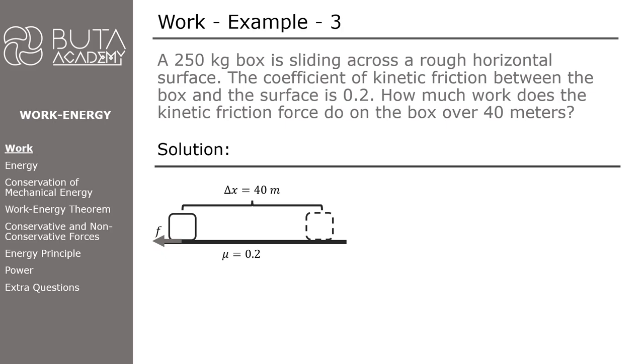Then we write down the equation for work, which is W = F × Δx × cos θ. The kinetic friction force is equal to the product of the coefficient of friction and the normal force, which in this case equals the mass multiplied by the gravitational acceleration. To learn more about the normal force, you can click the link above.